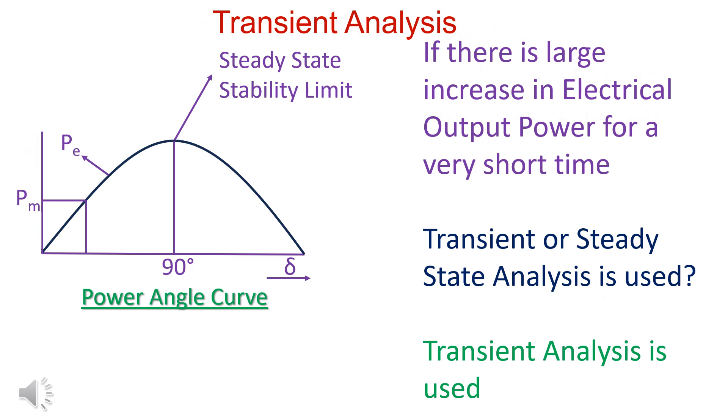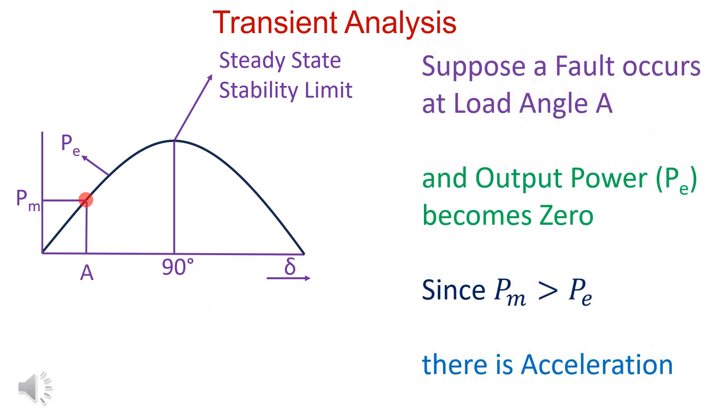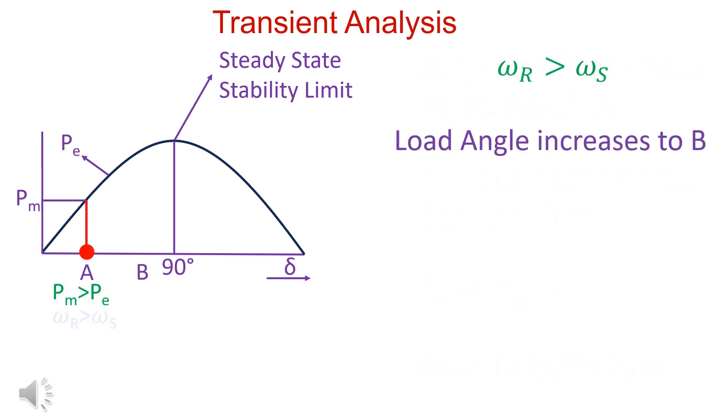If there is a large increase in load for a very short time, which analysis is used, transient or steady state? Transient analysis is used. A fault occurs at load angle A and PE becomes zero. Since PM has become greater than PE, there is acceleration. Omega R becomes greater than Omega S. Load angle increases to B.